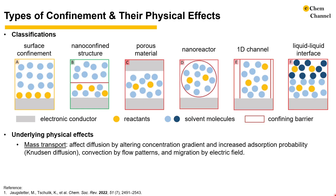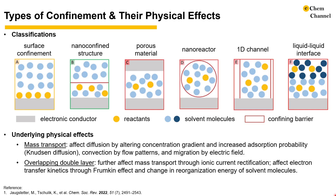In addition to Knudsen diffusion, the authors summarize numerous other physical effects that can be altered by confinement. These include influence on mass transport, where diffusion, convection, and migration are all affected due to the confined space and increased electric field. Applying potential in confined spaces can also lead to overlapping double layers, which can further affect mass transport by ionic current rectification, which increases ion conduction for one polarity but decreases it for the opposite polarity.